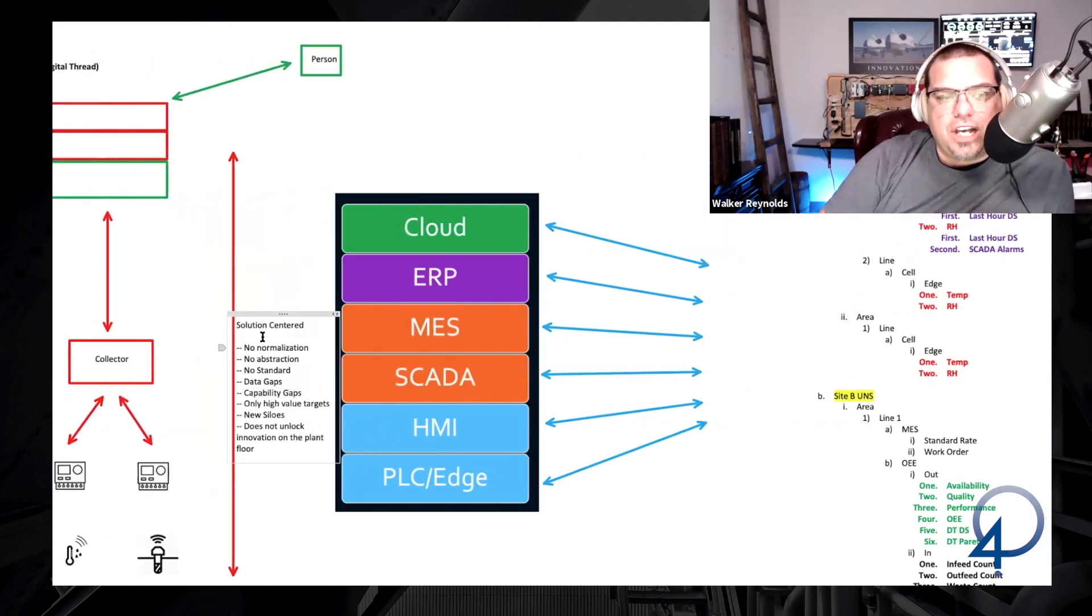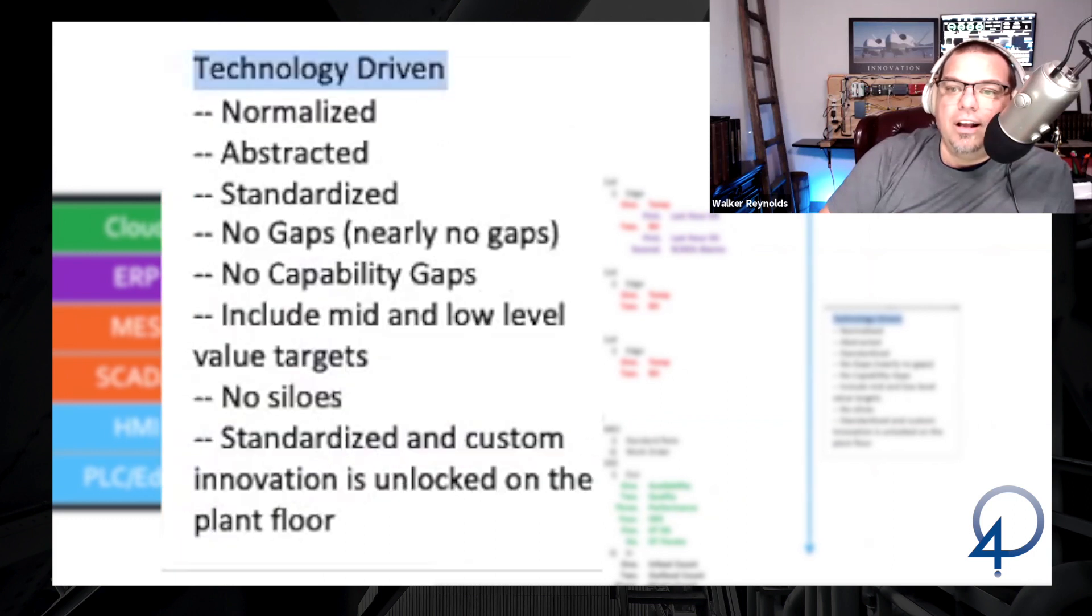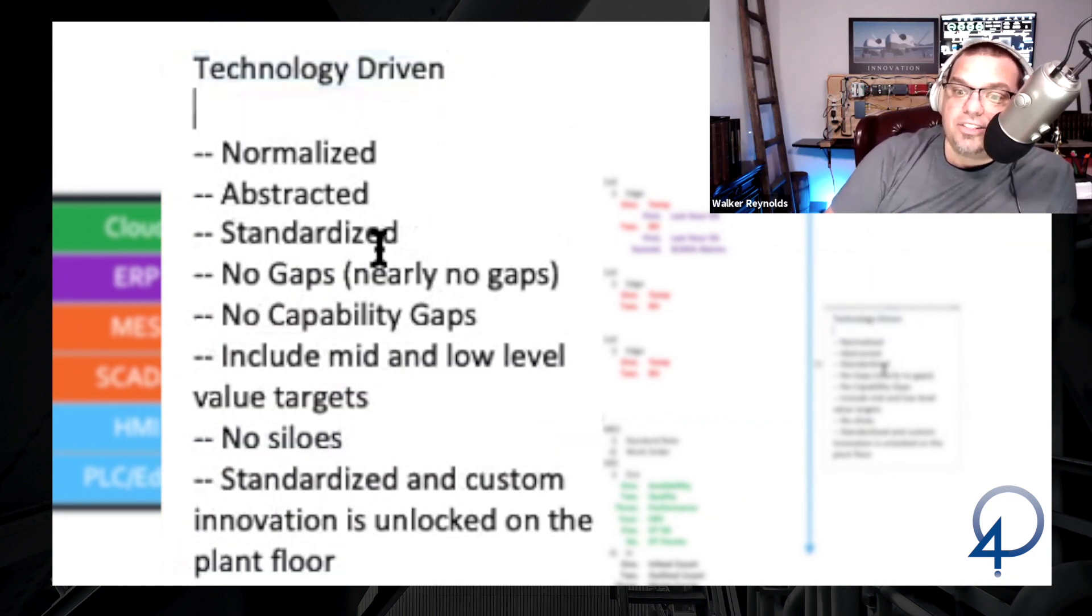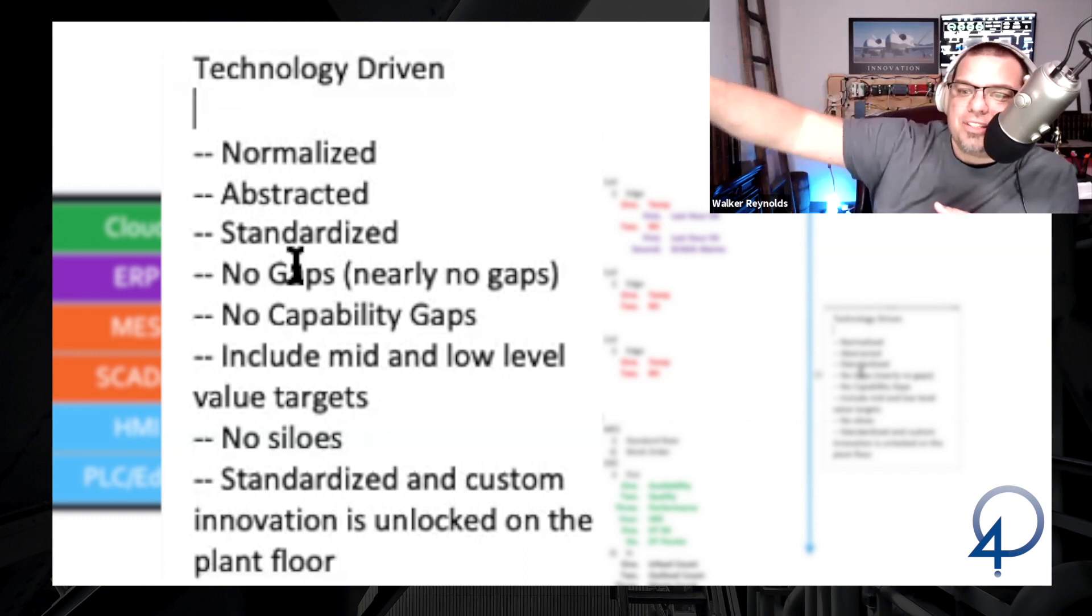If solution-centered gives us no normalization, no abstraction, no standard, data gaps, capability gaps, only high-value targets, new data silos, and it doesn't allow you to unlock innovation on the plant floor. Technology-driven gives you normalized data that's abstracted, standardized, with no gaps or nearly no gaps. The gaps you're going to have are only in the data where the technology doesn't meet your minimum technical requirements.